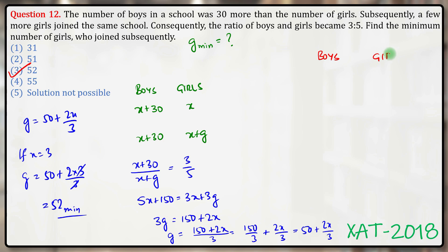That is one way to solve this question. Another way to solve this question would have been: if the number of boys and girls after the girls joined were in the ratio 3 is to 5, I can say that there were 3a boys and 5a girls. Now because the number of boys didn't change, that means the number of boys earlier should also have been 3a, and therefore the number of girls earlier should have been 3a minus 30.